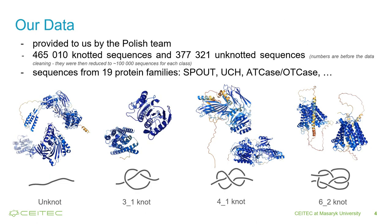Our data consists of protein sequences and structures from both experimentally available sources and also AlphaFold 2. Note that we used proteins from 19 different protein families, where some consist of both knotted and unknotted proteins, such as the ATC-OTC family, or some are made up of exclusively knotted proteins, such as the SPOUT family.